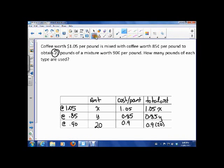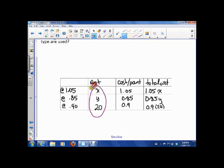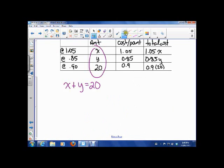So, let's see where that gets us. That gets us equation 1 is X plus Y equals 20. Equation 2 is 1.05X plus 0.85Y equals 18. So, 0.9 times 20 is 18. And, so, there's our two equations. 1, 2.